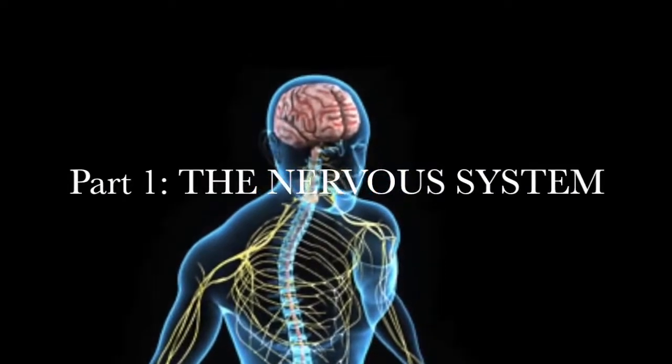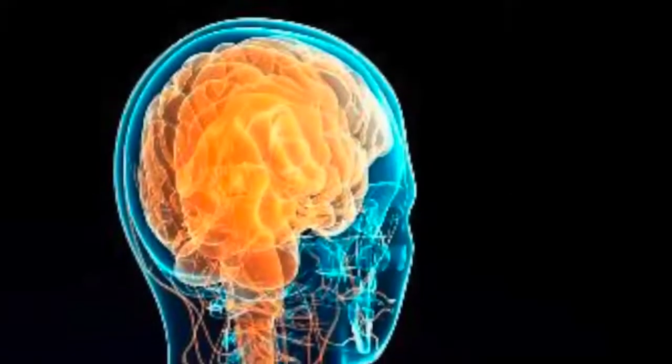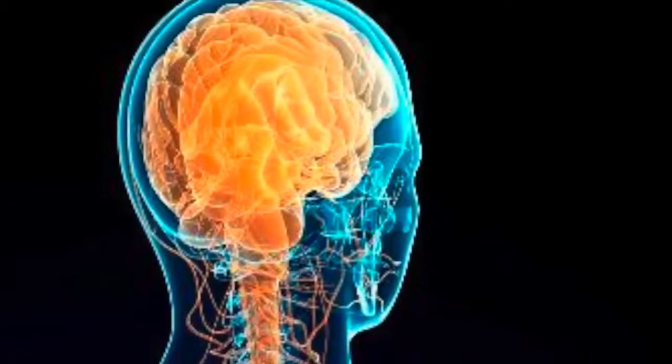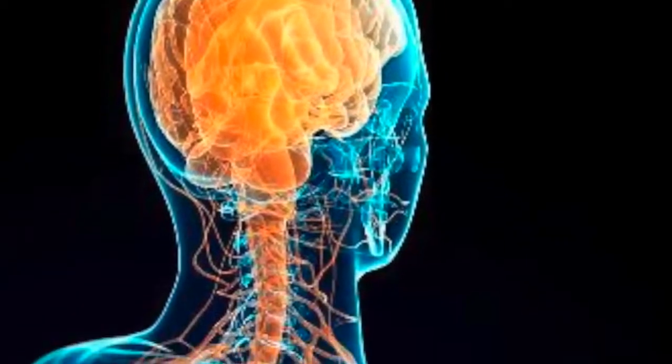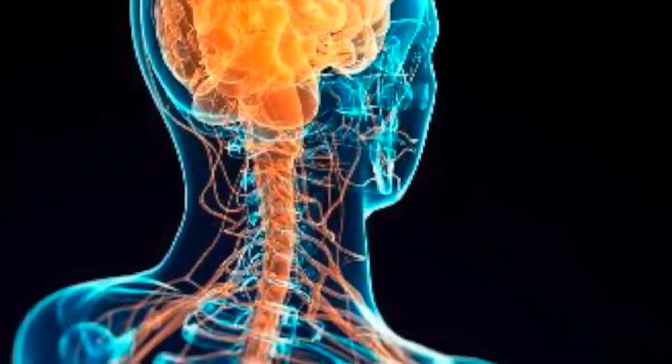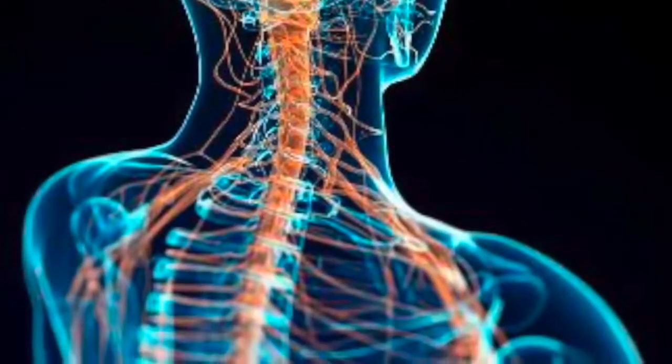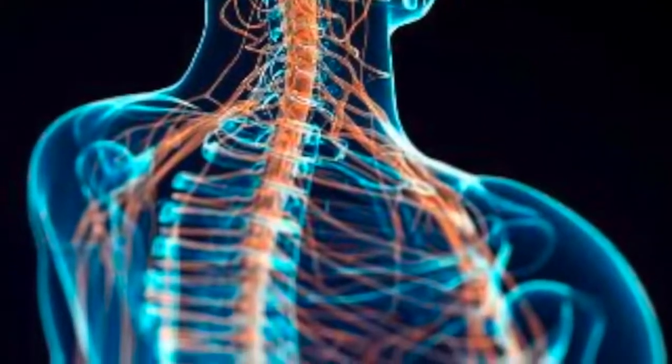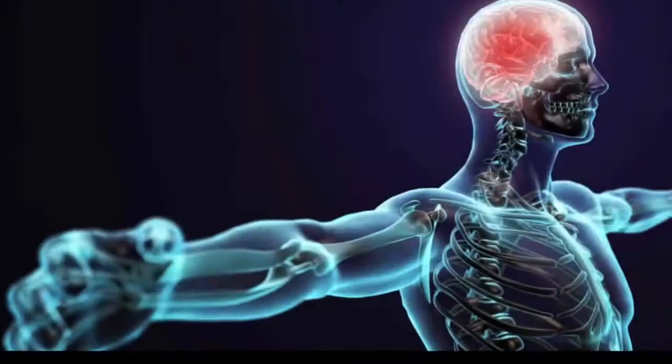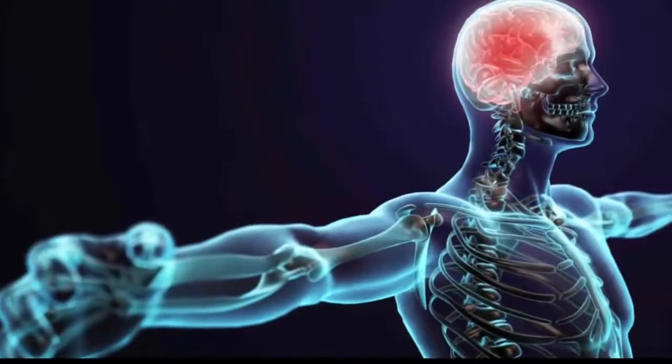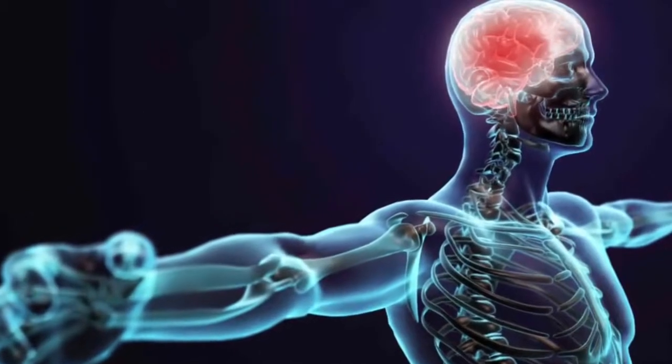The nervous system is divided into two major parts. First, the central nervous system, which consists of the brain and the spine. The central nervous system is where all information and signals come to and from. It is central to all the activity in the human body.